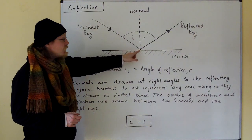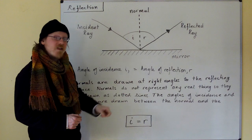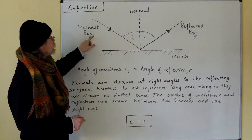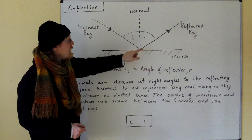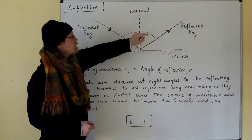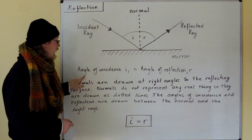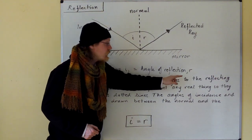At the point of reflection we have a normal line. The angle of incidence is drawn between the incident ray and the normal, and the angle of reflection is drawn between the reflected ray and the normal. The angle of incidence I equals the angle of reflection R.